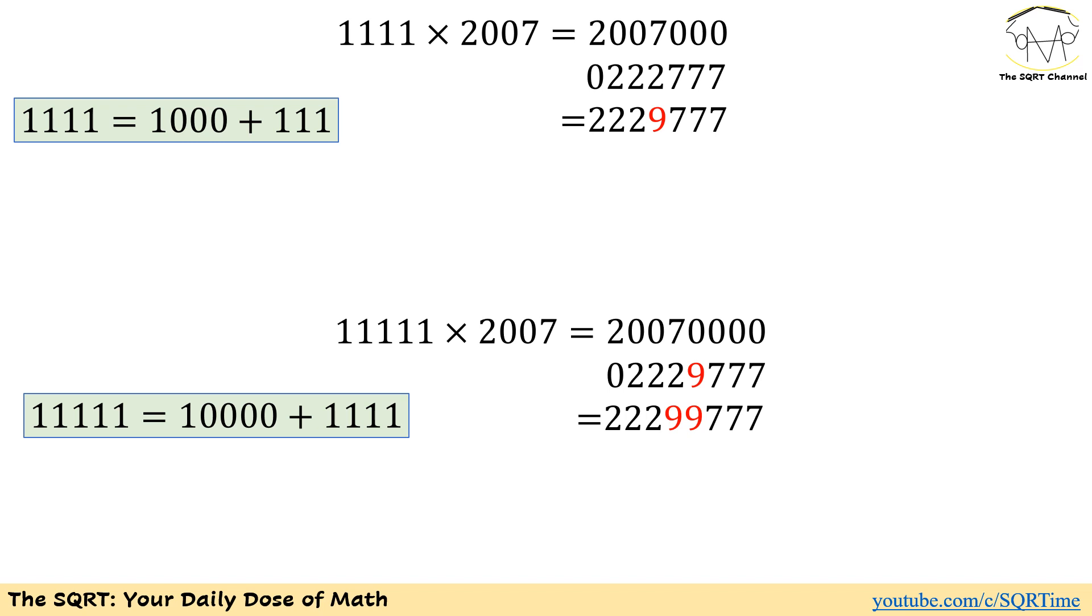To continue, let's do that with 1111. We are going to write it as 1000 plus 111. We already found 111 times 2007. For 1000 times 2007, we append three zeros on the right-hand side. If you add them together, you are going to see something new.